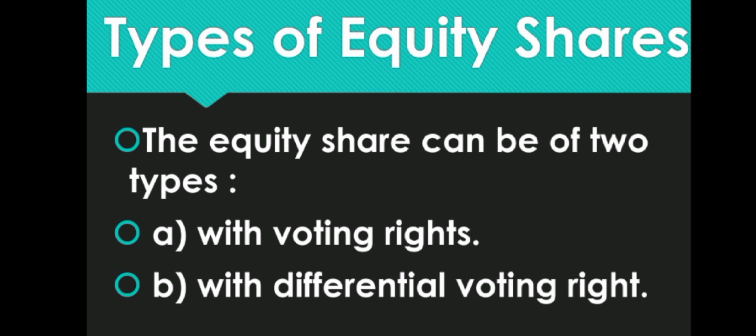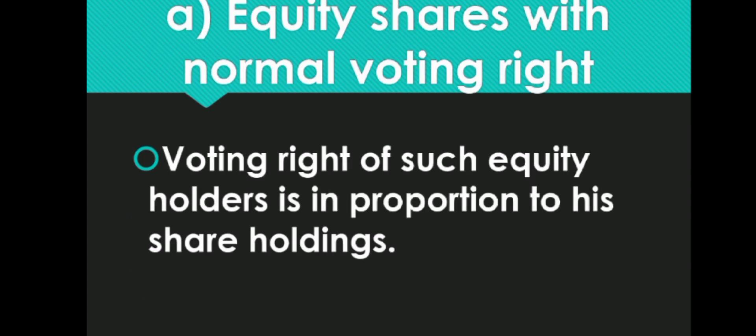Types of Equity Shares. There are two types of equity shares: first, with voting rights, and second, with differential voting rights. First is equity shares with normal voting rights — the voting rights of such equity holders are in proportion to their shareholdings, meaning one vote per one share.